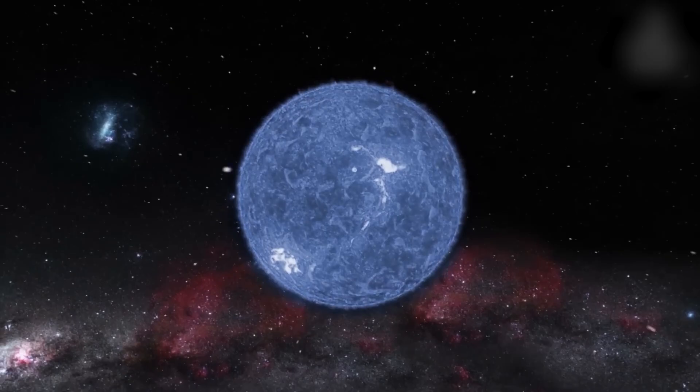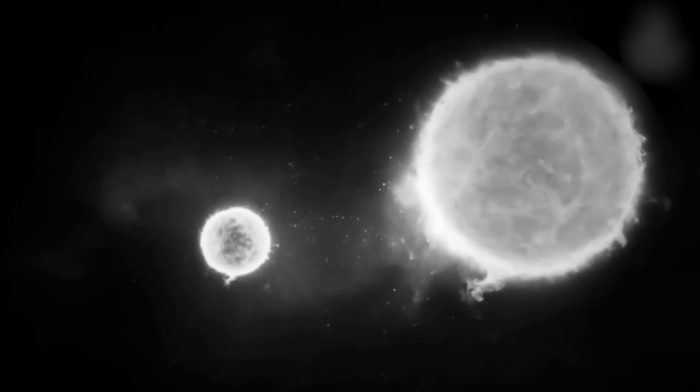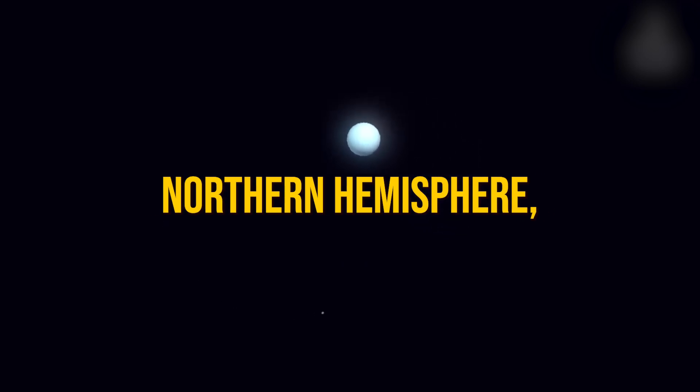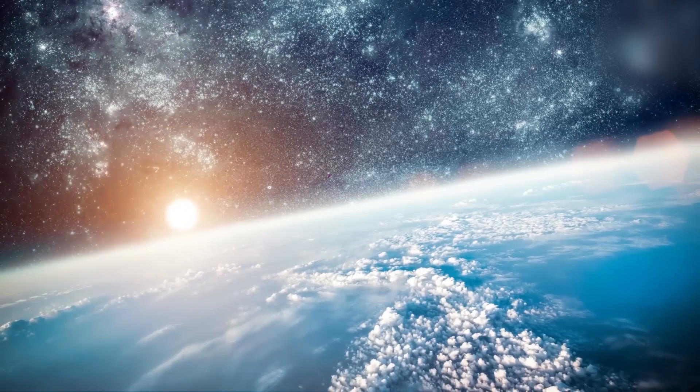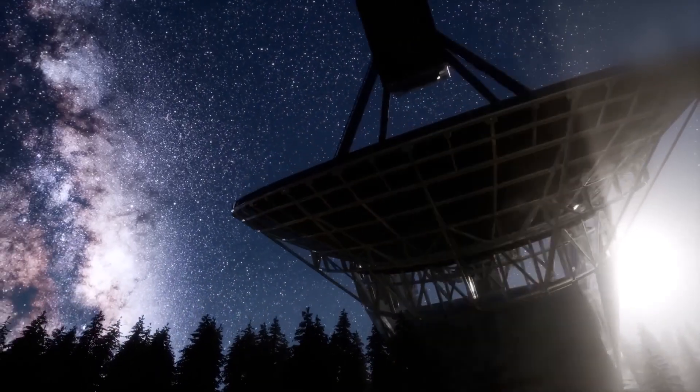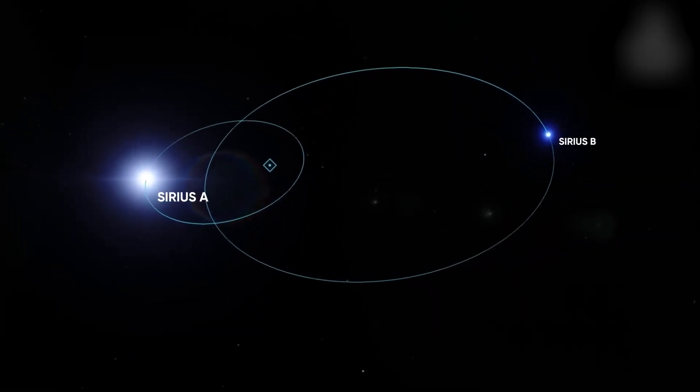Currently, Sirius is particularly prominent in the night sky, making it an ideal time for stargazers to observe this magnificent star. Visible throughout the winter months in the Northern Hemisphere, Sirius shines brightly just after sunset, easily outshining other celestial objects. Its position in the constellation Canis Major makes it a standout feature, often drawing the attention of both seasoned astronomers and casual viewers alike.